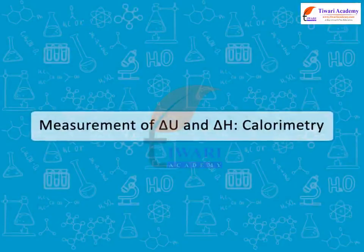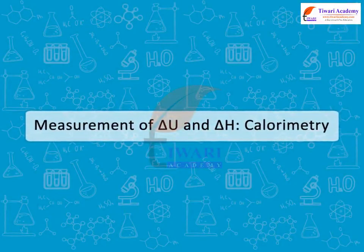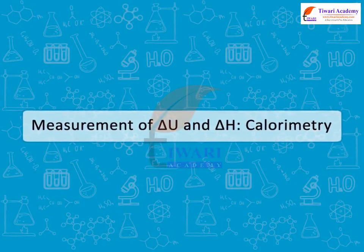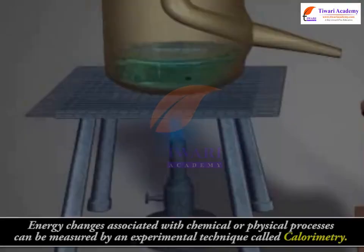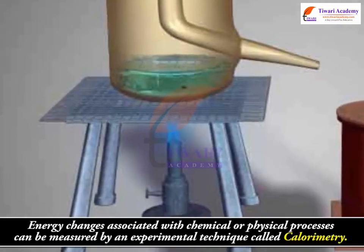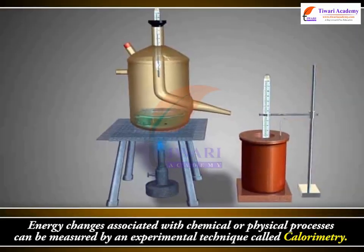Measurement of delta U and delta H: calorimetry. Energy changes associated with chemical or physical processes can be measured by an experimental technique called calorimetry.